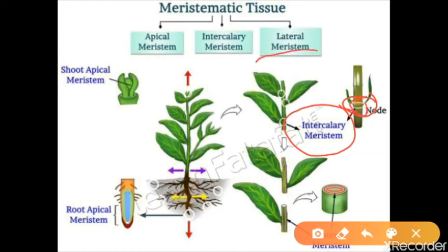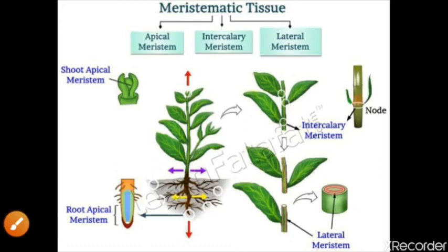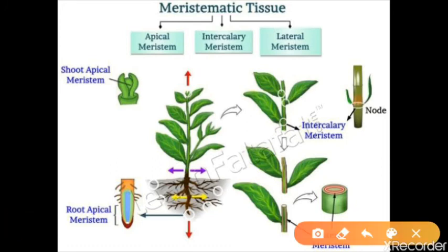Lateral meristematic tissue is found on the sides of roots, stems, and branches. It is responsible for increasing the thickness of the stem. So we have finished today's video on meristematic tissue. In the next video, we are going to see the other part, which is permanent tissue.